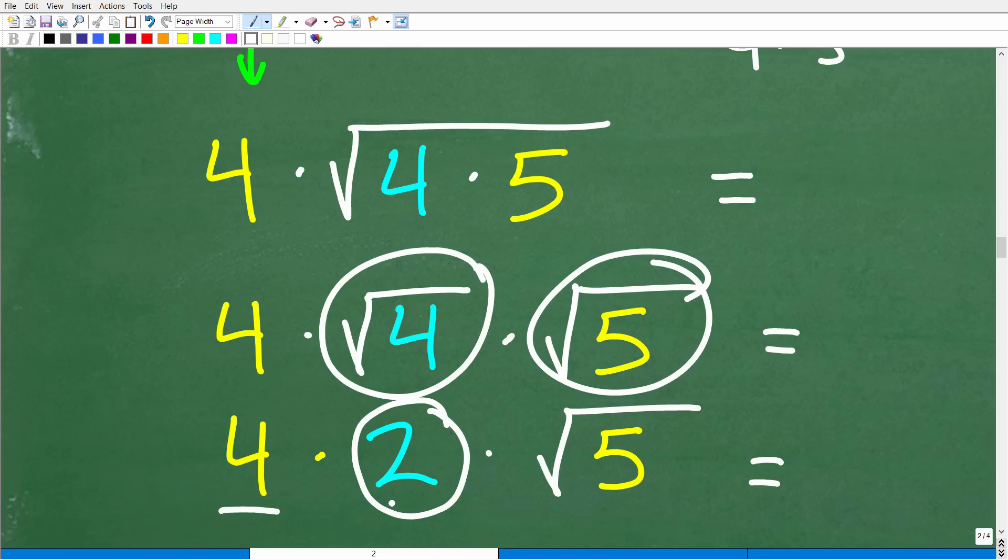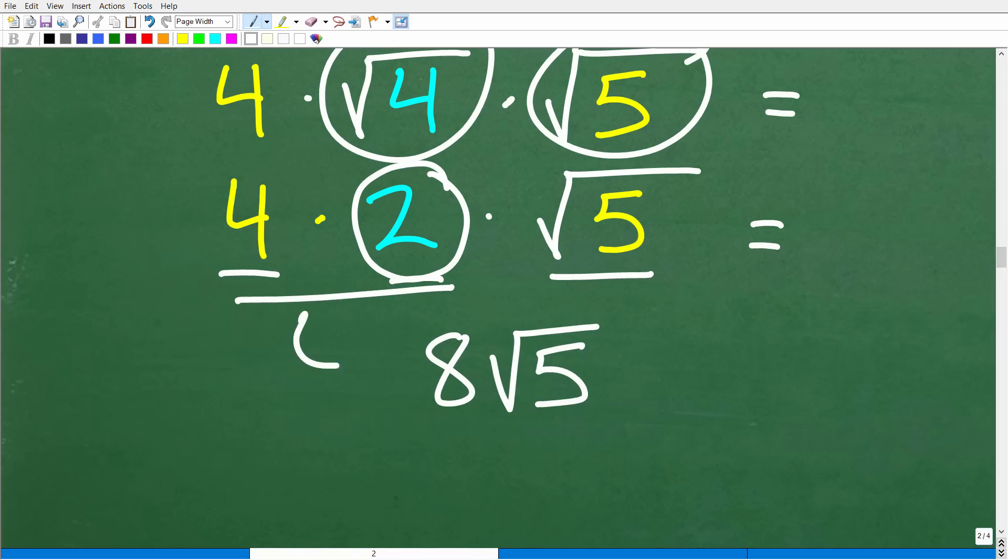4 times the square root of 20 is the same thing as 4 times the square root of 4 times 5. Now, I can break this up using that property that we talked about. So, this is going to be 4 times the square root of 4 times the square root of 5. And the square root of 4 is 2. So, now we have 4 times 2 times the square root of 5, which, of course, is going to be 8. And now, we just have the square root of 5. So, this is our final answer.